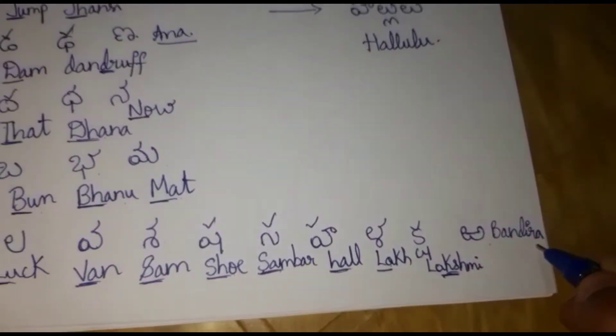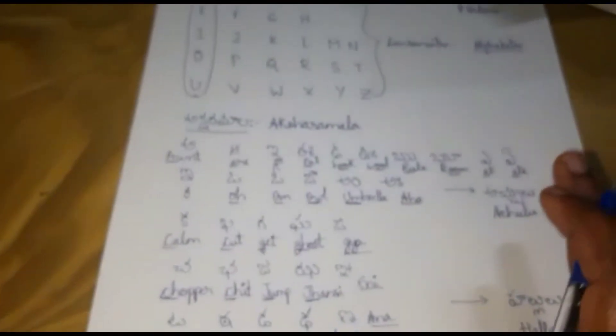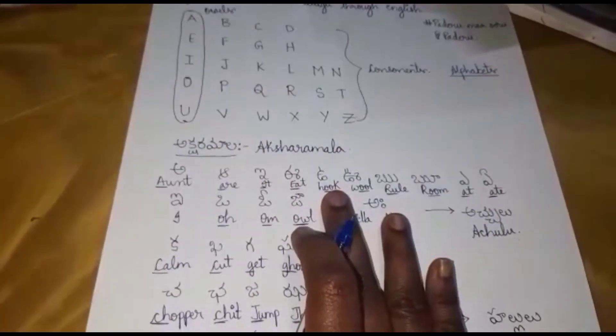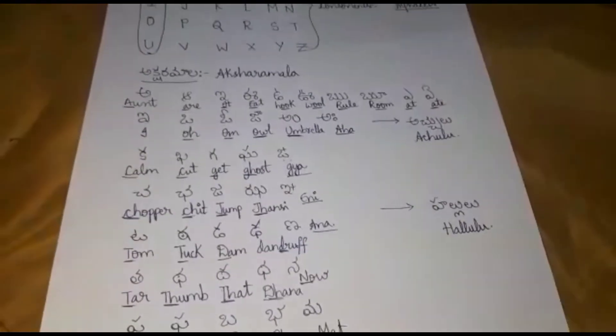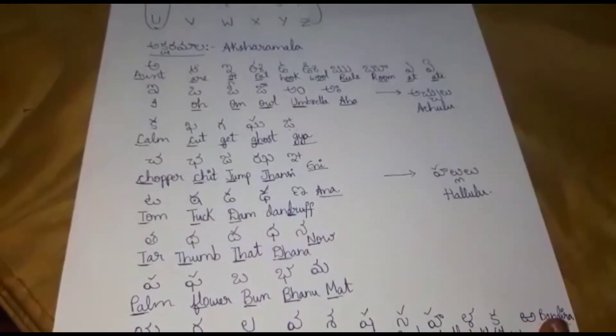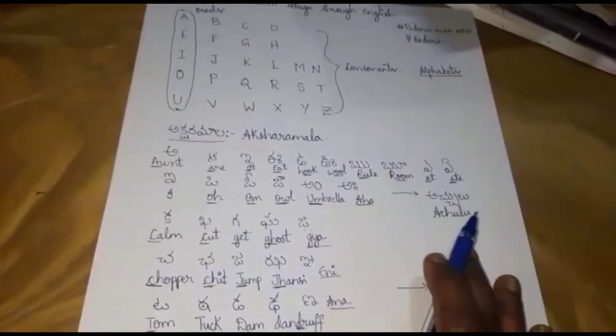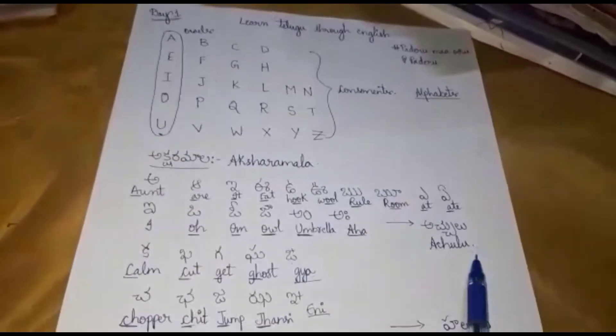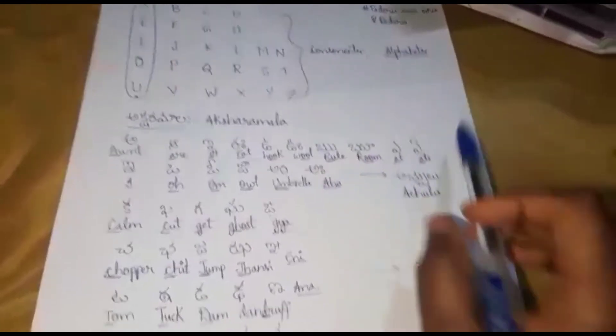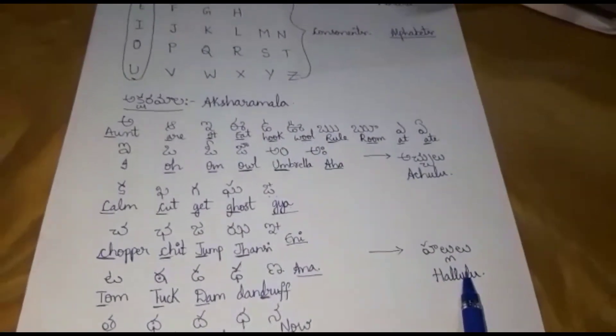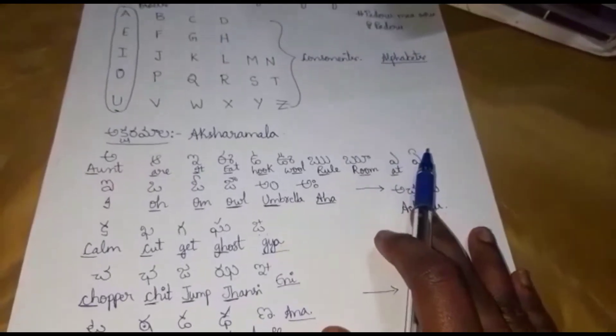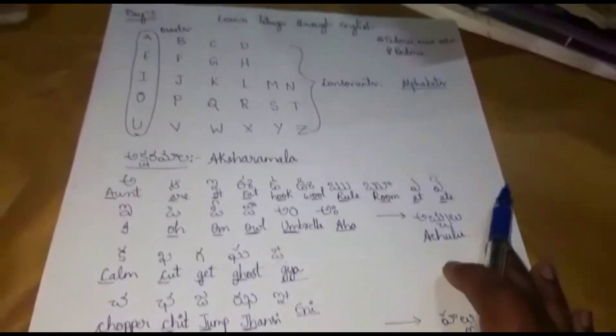So, in this first class, we have learnt the letters from A to Bandira. And now, you need to observe that vowels are similar to Achulu and consonants are similar to Hallulu. So, that's it for today's video. If you like this video, don't forget to like, share, and subscribe.